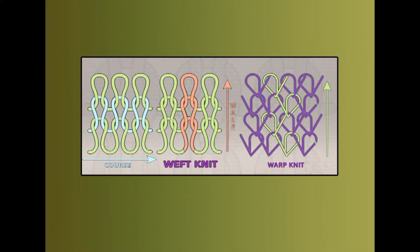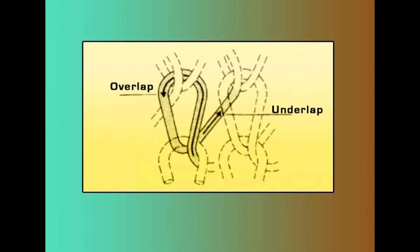Warp knitting represents the fastest method of producing fabric from yarns. Warp knitting differs from weft knitting basically in that each needle loops its own thread. The needles produce parallel rows of loops simultaneously that are interlocked in a zigzag pattern. The stitches on the face of the fabric appear vertically but at a slight angle, and the stitches on the back appear horizontally as floats at a slight angle. These floats, called laps or underlaps, are a distinguishing identification of warp knits.